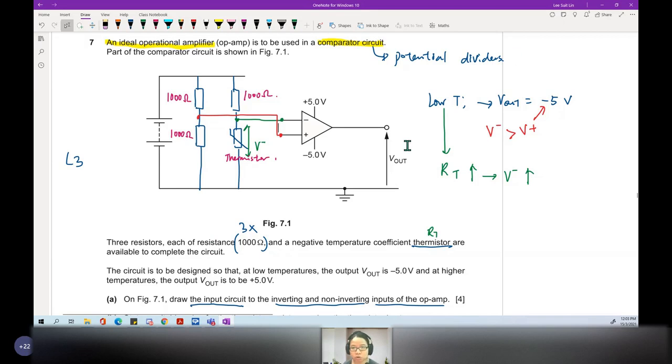We can test more. When temperature is low, this thermistor resistance is greater, meaning V minus will increase. Because this is series. So this V minus will increase. If this V minus is increased, then the output will be negative.